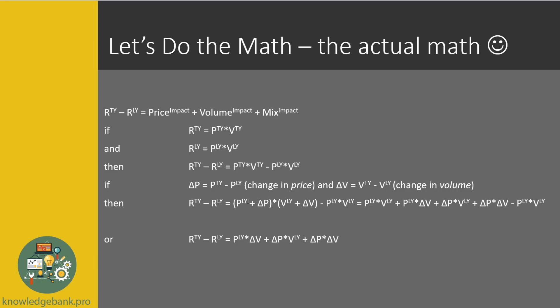Then I just multiply and solve this equation. You will notice that the first part of this equation is cancelled out by the last part, so at the end of the day we're left with these components: change in revenue = price last year × change in volume (the volume impact) + change in price × volume last year (the price impact) + change in price × change in volume (the mix impact).